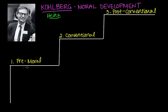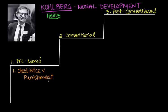Each of these three levels is further split into two stages, giving six stages of moral development altogether. The first stage of the pre-moral level is obedience versus punishment. At this basic level, authority is outside the individual, and reasoning is based on physical consequences of actions. Children see rules as fixed and absolute — obeying the rules is a means to avoid punishment. If the child is good, they avoid being punished; if they are punished, they must have done something wrong.